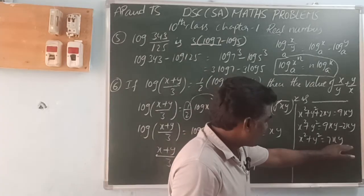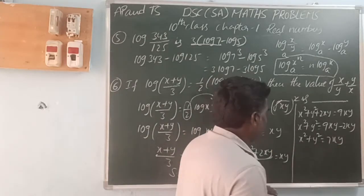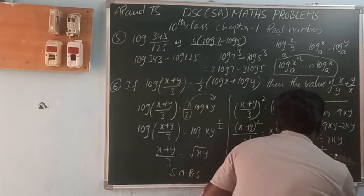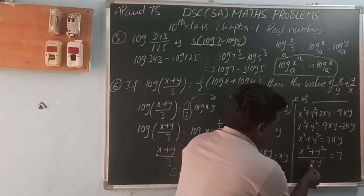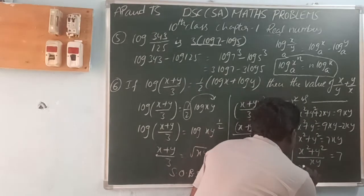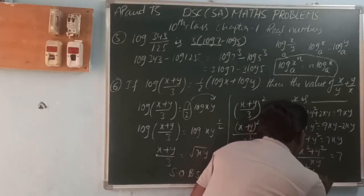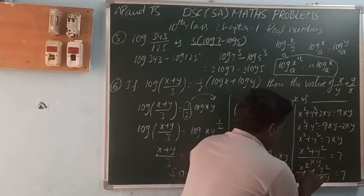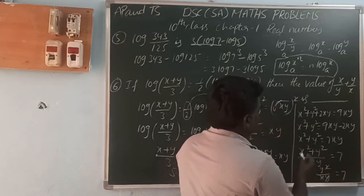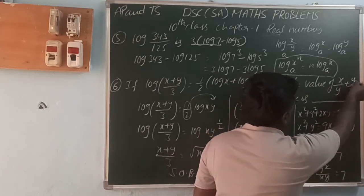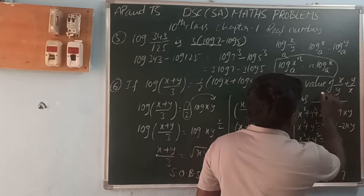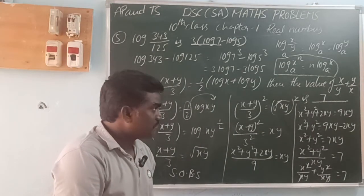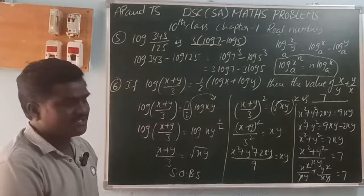So x squared plus y squared equals 7xy. Dividing both sides by xy: x squared by xy plus y squared by xy equals 7. Cancelling common terms: x by y plus y by x equals 7. So the value of x/y plus y/x is 7.